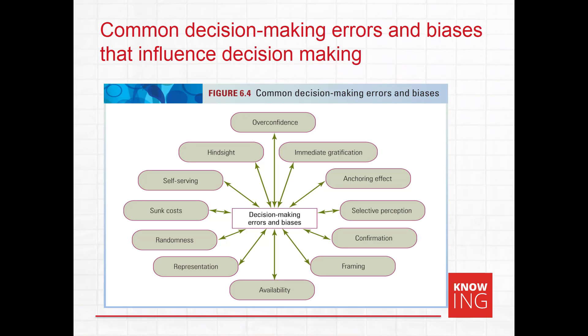A commonly used example of groupthink is NASA's 1980s Challenger disaster, where a faulty component led to a manned mission exploding. In that case, groupthink was blamed for a lack of identification of the faulty component.